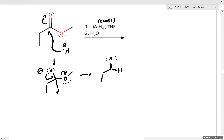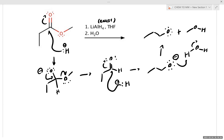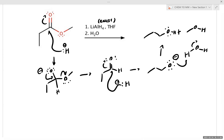The alkoxide intermediate is then quenched with water to generate our primary alcohol. As a byproduct we generate methanol. This can be useful if you're trying to isolate both a primary alcohol and the alcohol that was originally part of your ester functional group.